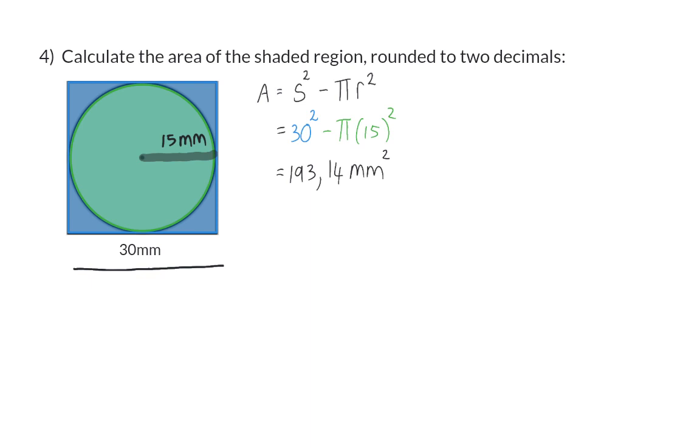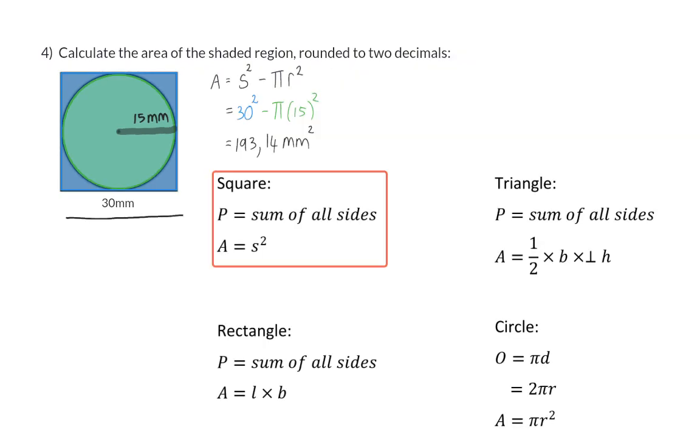Now you should know and be able to use the formulas for the area and perimeter of a square, rectangle, triangle, and circle.